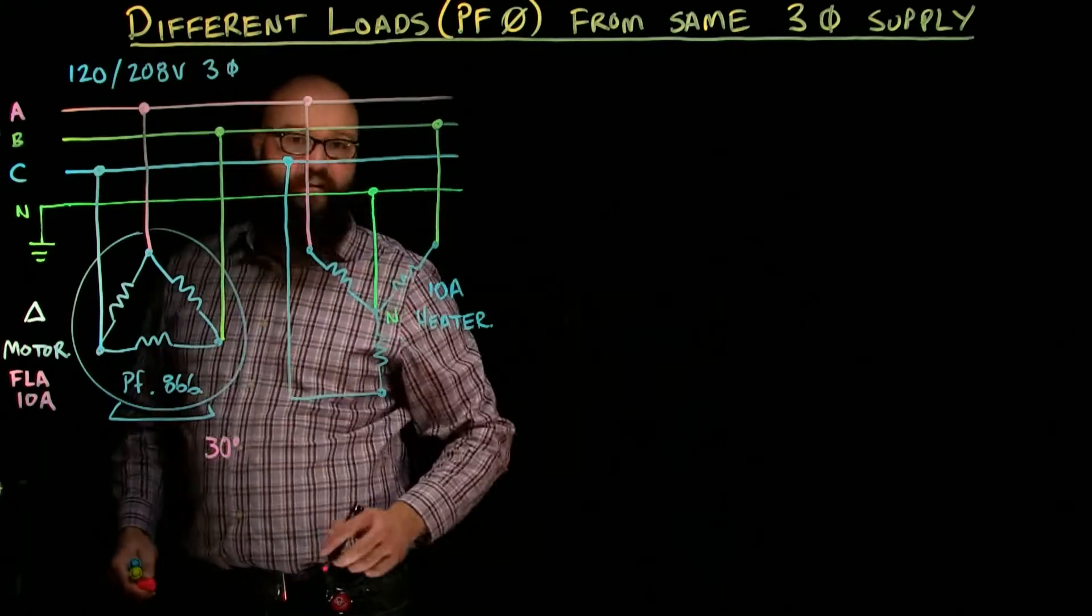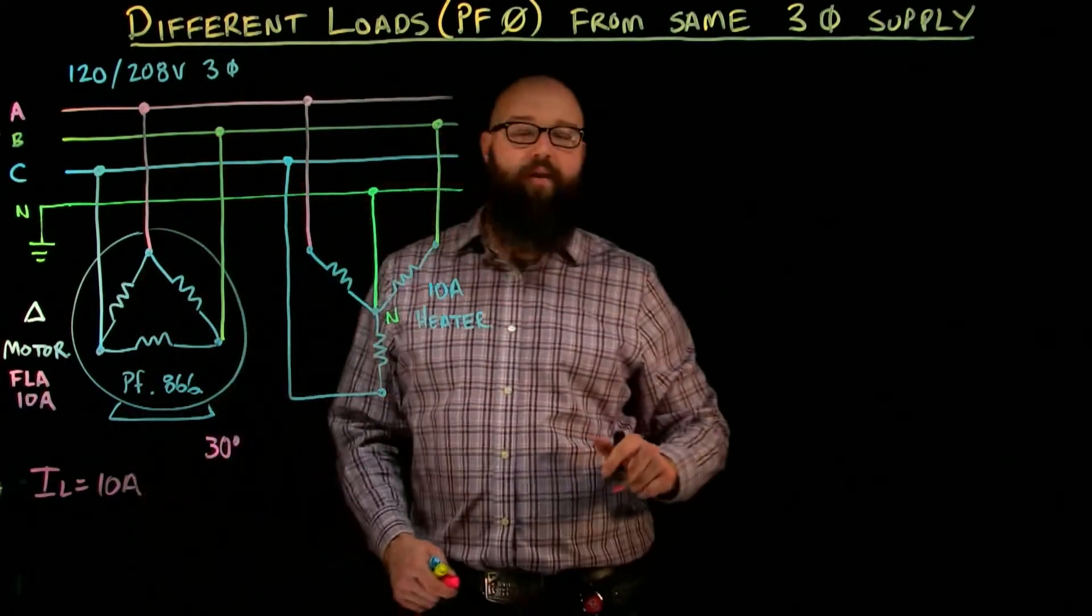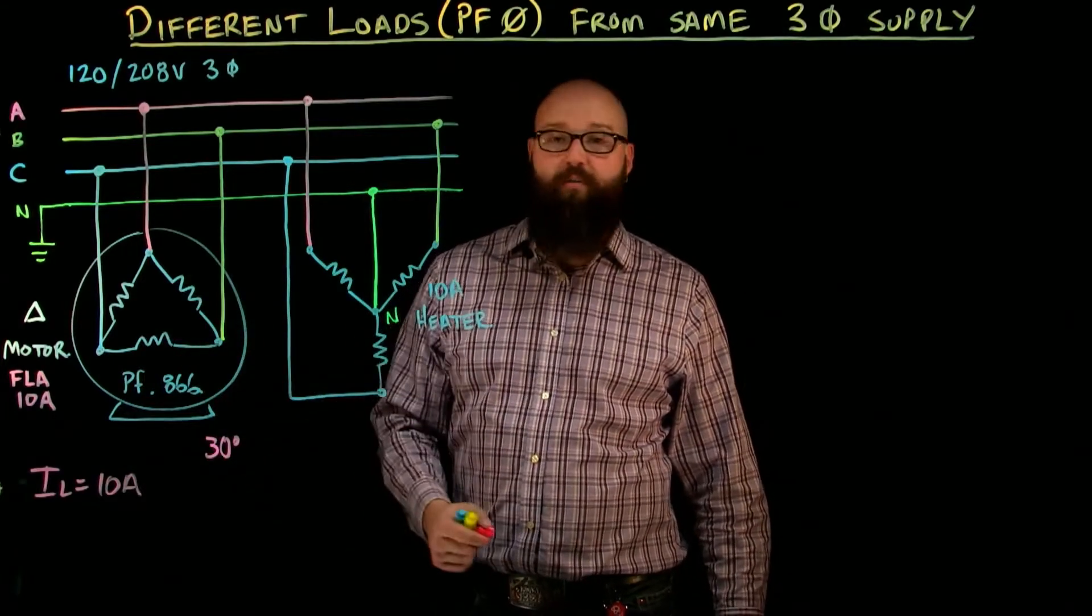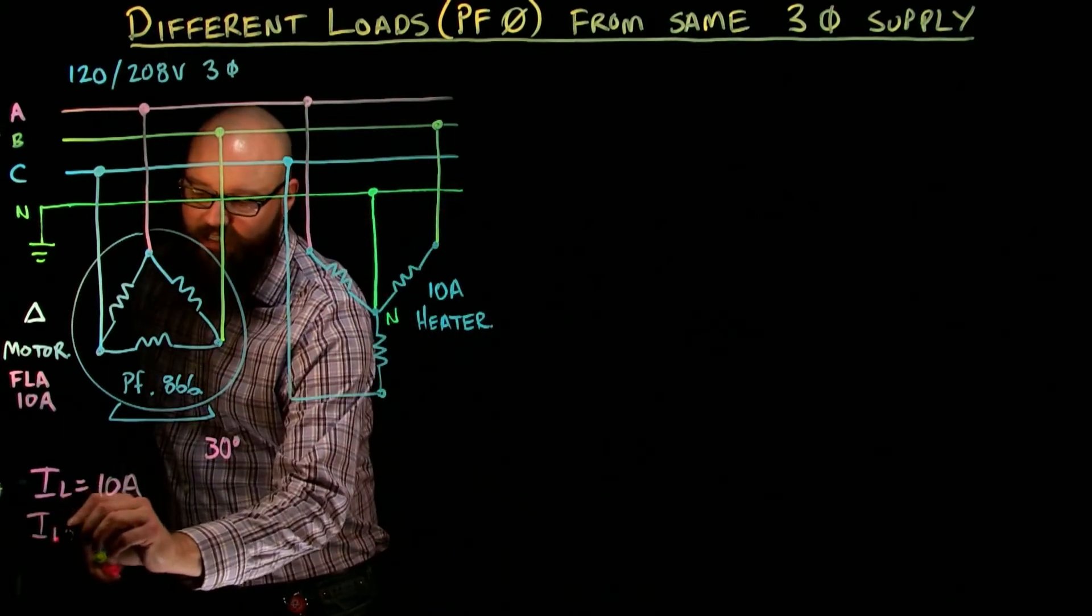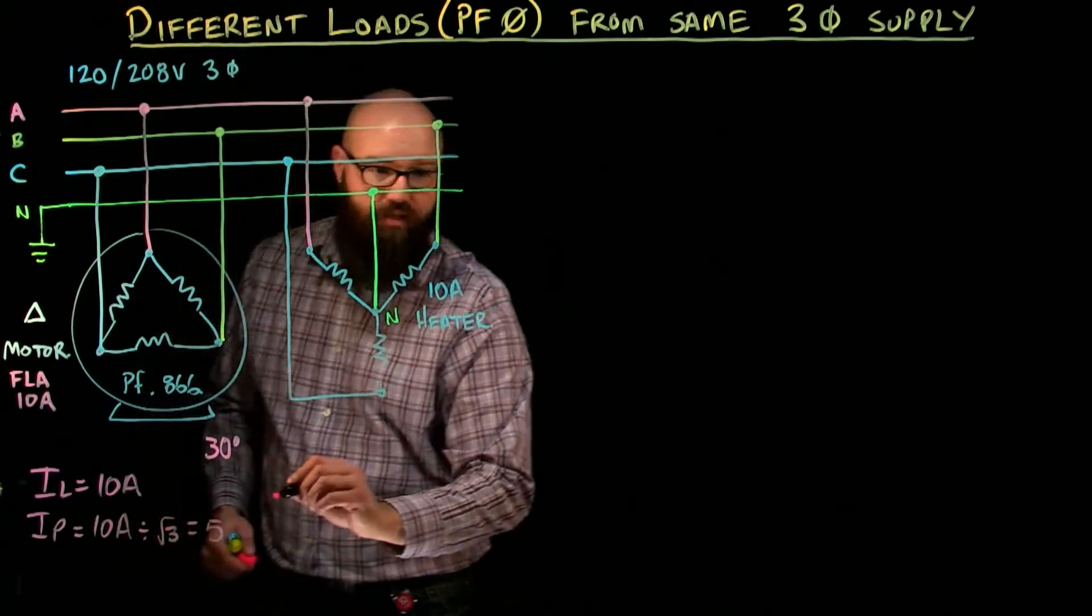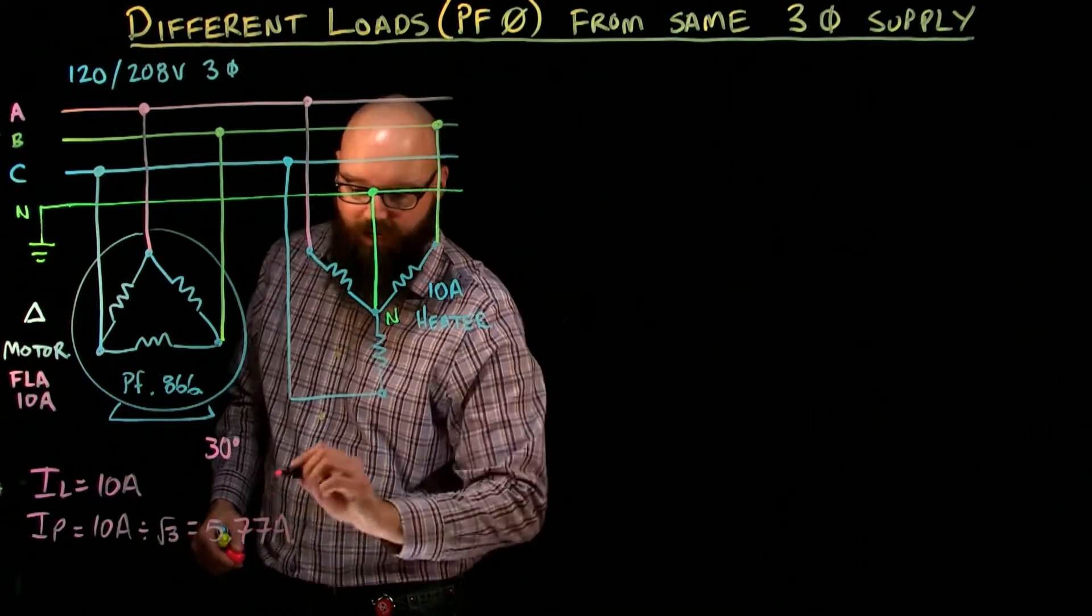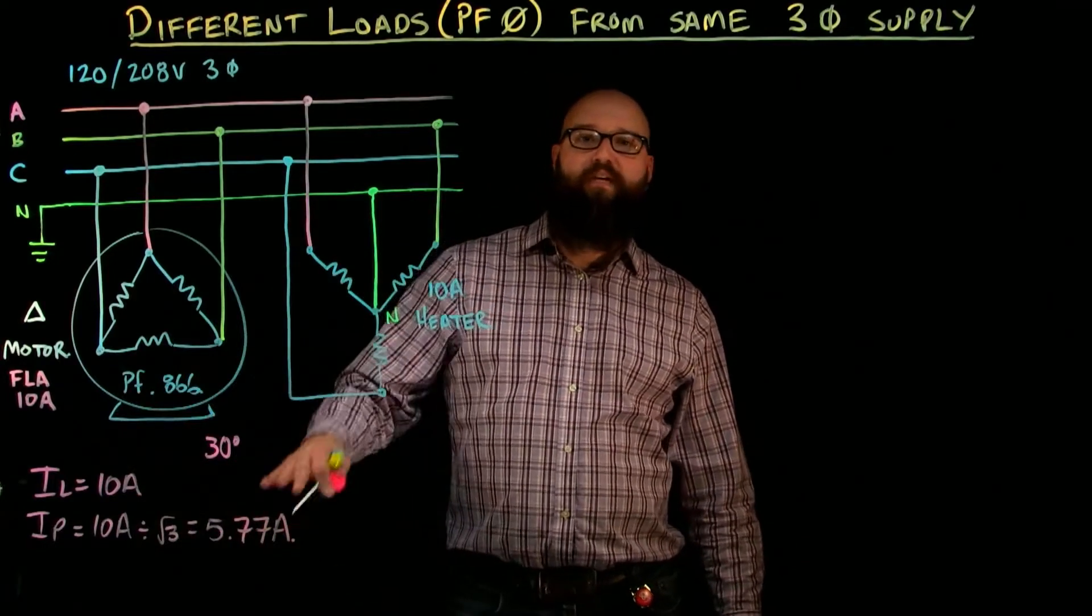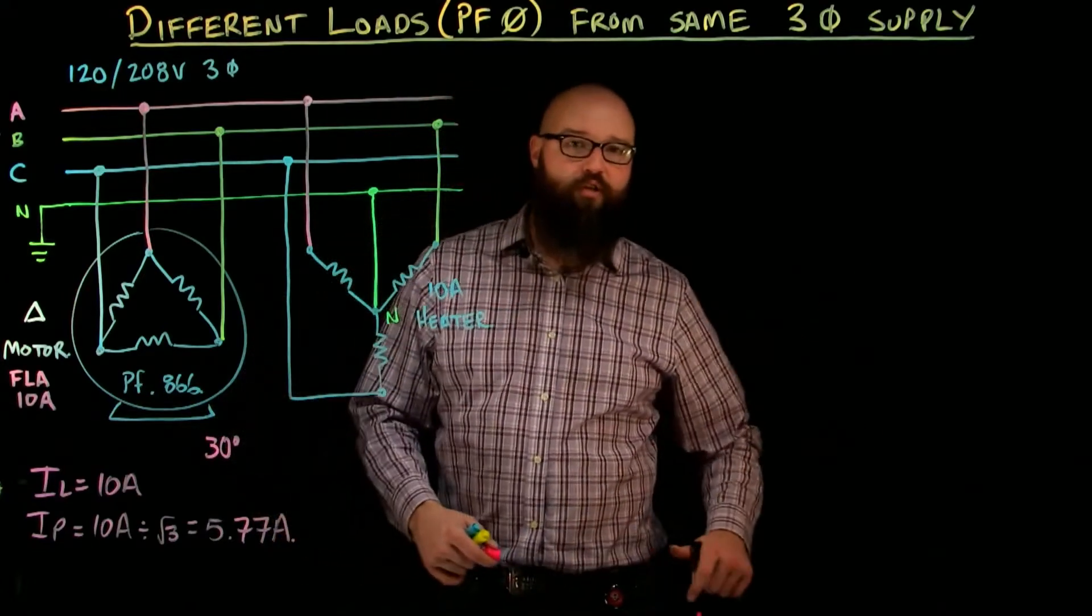We know that we have an FLA of 10 amps so our I line equals 10 amps. Our phase current rule of a Delta is going to be root 3 smaller than my line current if it is a balanced load which it is, it's a motor. So my I phase equals 10 amps divided by root 3 equals 5.77 amps. And we know based off the power factor that that 5.77 amps is going to lag the phase voltage by 30 degrees and we'll plot that after.